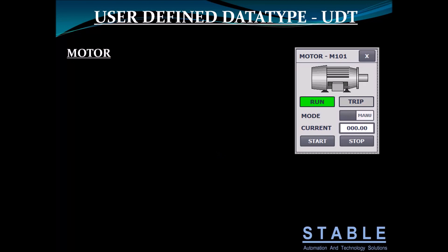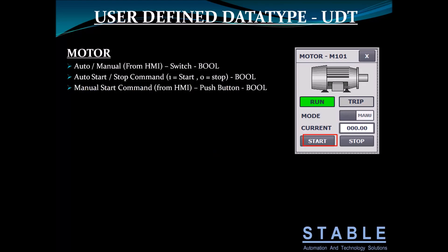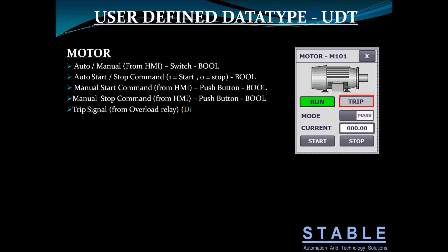For example, in our motor we have auto and manual modes that we change from the HMI, along with start and stop commands. When you put the motor in auto, your logic will decide to start and stop the motor. But when you put the motor in manual, you can start and stop it from the HMI or the plant. A trip signal comes from the overload relay, and a run command is a digital output.